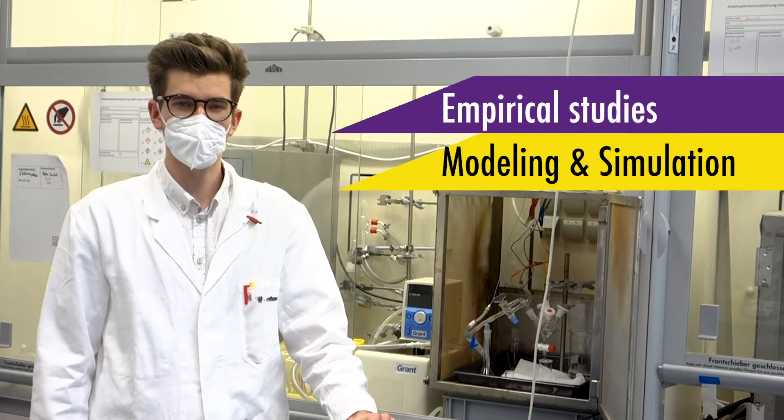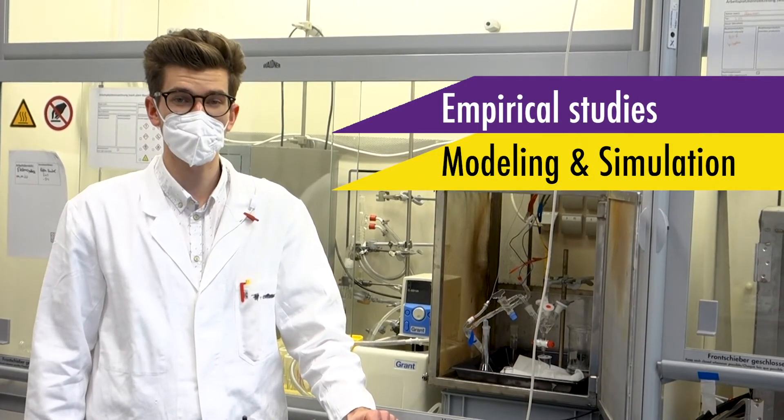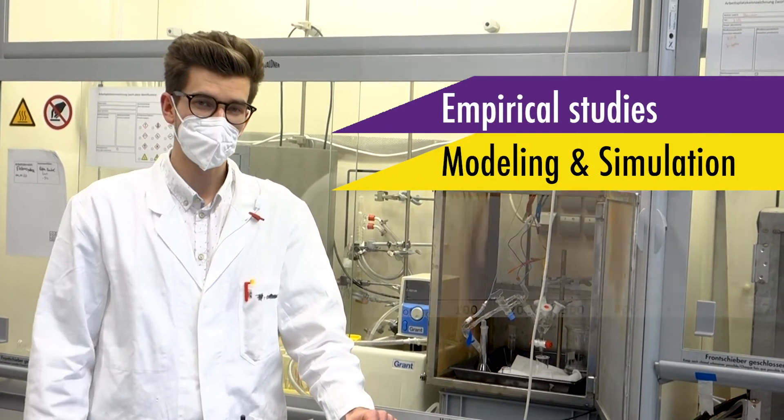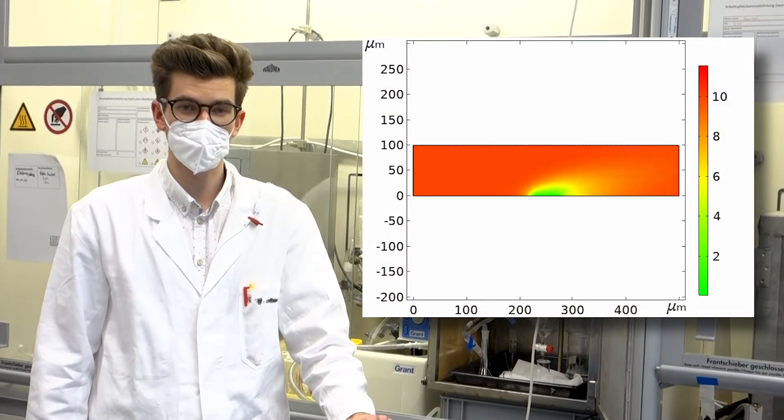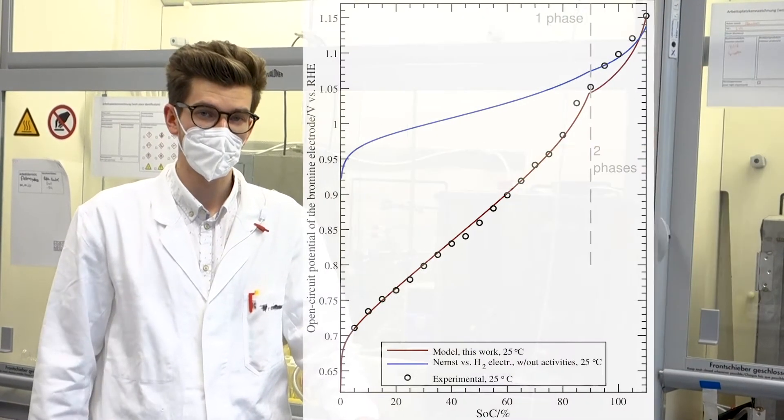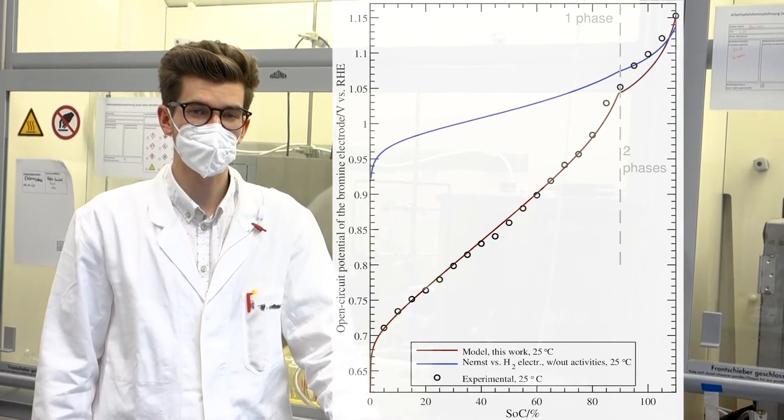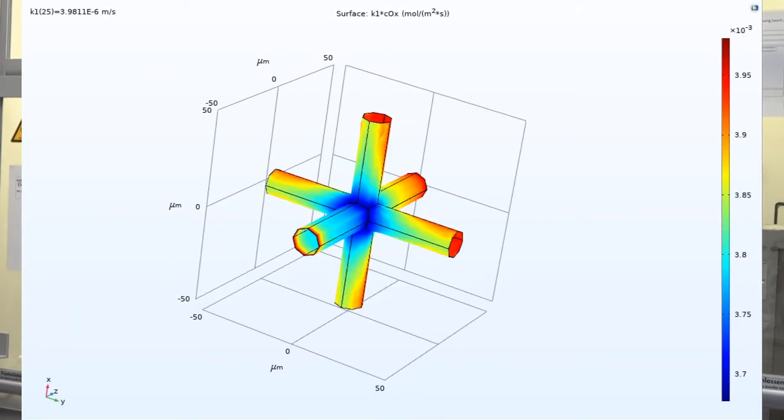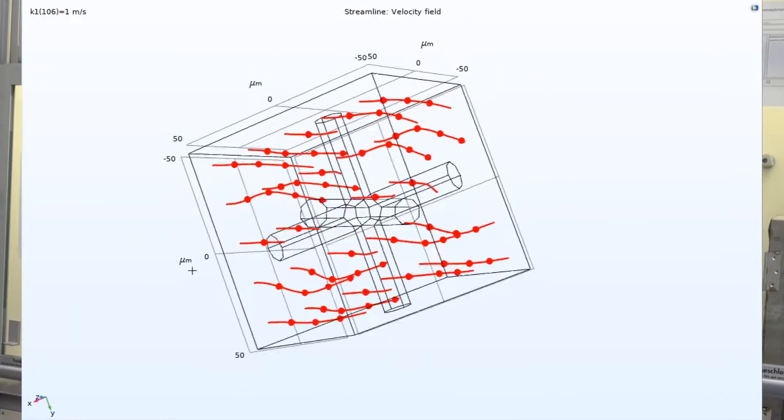To better understand the phenomena governing the flow battery cell operation, it is vital to combine empirical studies with mathematical modeling and simulation. Simulations provide the ability to better interpret experimental data. For instance, I analyze cell voltage, which is related to thermodynamics, or fluid flow, which impacts cell performance limits.